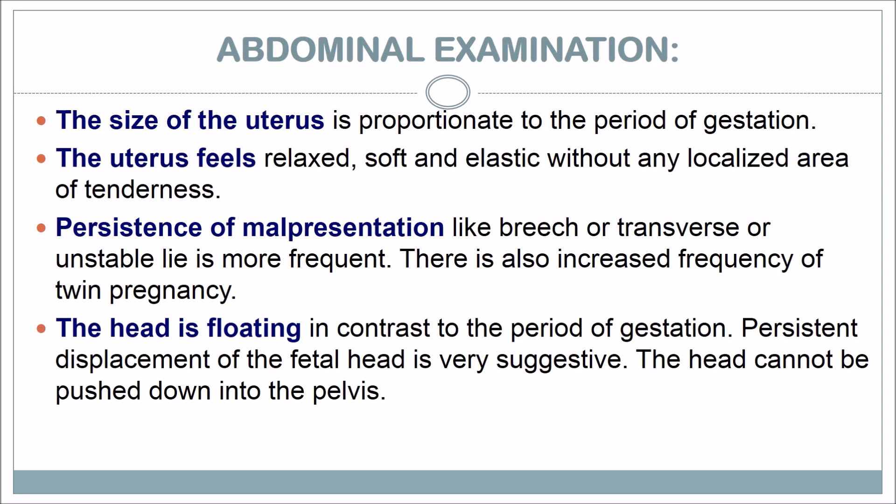On abdominal examination, the size of the uterus is proportionate to the period of gestation. The uterus feels relaxed, soft, and elastic without any localized area of tenderness. Persistence of malpresentation such as breech, transverse, or unstable lie is more frequent. There is also an increased frequency of twin pregnancy. The head is floating in contrast to the period of gestation.